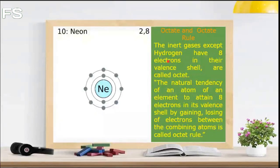These elements do not take part in chemical bonding. All atoms of elements try to lose or gain electrons from their valence shell to attain stable electronic configuration of the nearest inert gas, except hydrogen, lithium, beryllium, and boron. This is called the octet rule.